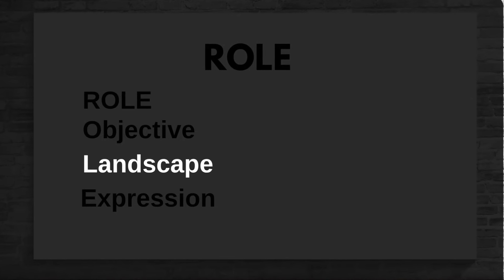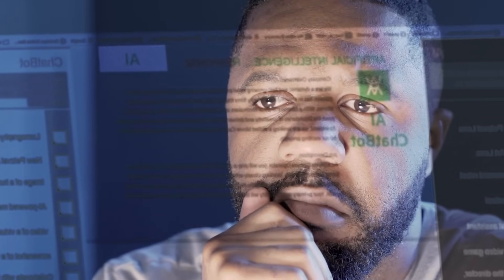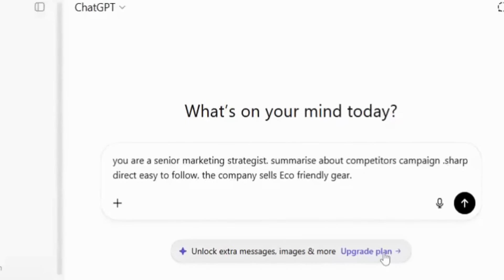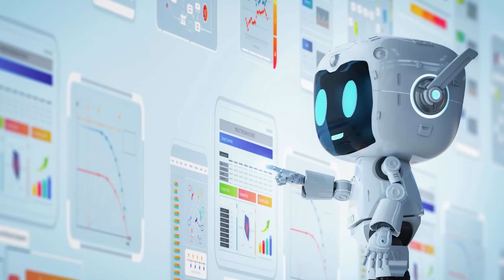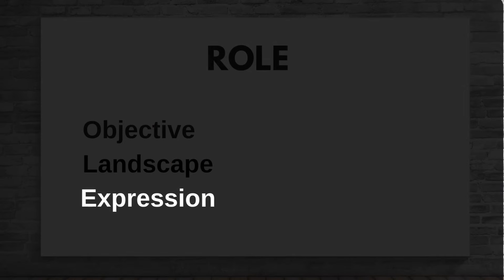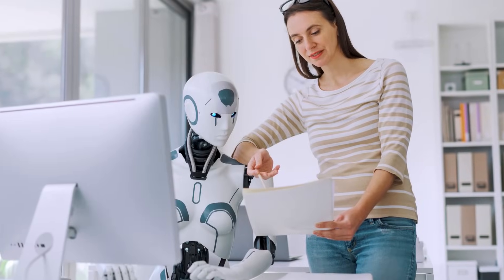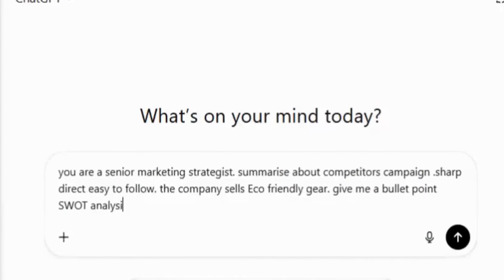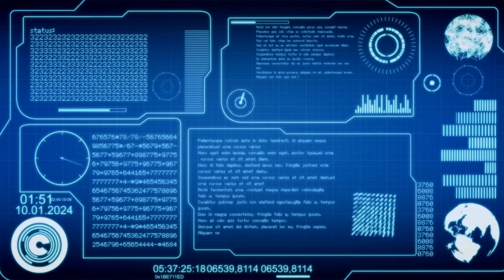Then, Landscape — this is the background context that most people skip. Without it, the AI just guesses. So here we'd add: 'The company sells eco-friendly fitness gear.' Now the AI has something specific to anchor its answers on. And finally, Expression — this is where we tell it exactly how we want the output. For example: 'Give me a bullet point SWOT analysis.' Now the AI not only knows what to say, but how to present it.